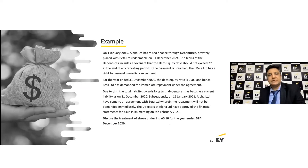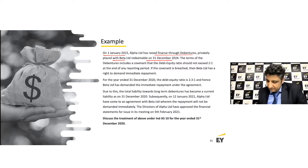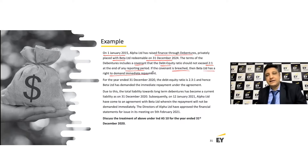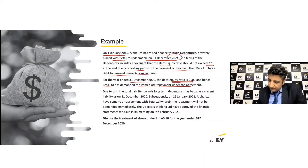Let's have a look at this example. On 1st January 2015, Alpha Limited raised finance through debentures privately placed with Beta Limited, redeemable on 31st December 2024. The terms include a covenant that the debt-equity ratio should not exceed 2:1 at the end of any reporting period. If the covenant is breached, the lender has a right to demand prepayment. For the year ended 31st December 2020, the debt-equity ratio actually exceeds the benchmark, and therefore Beta Limited has demanded immediate repayment — making something due four years later now a current liability.